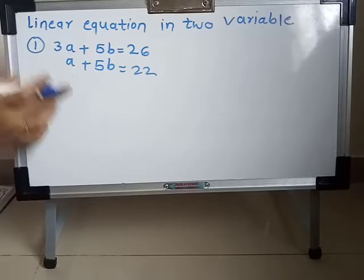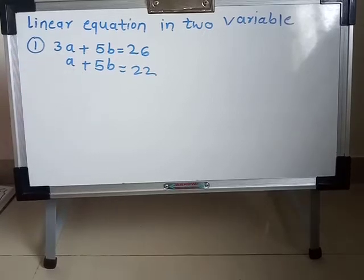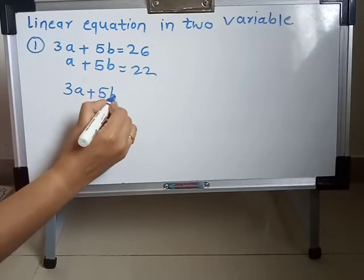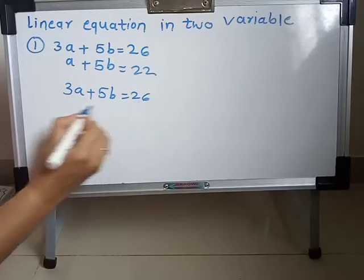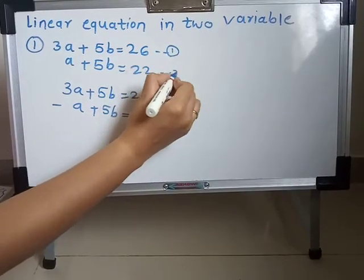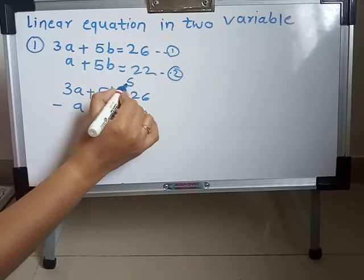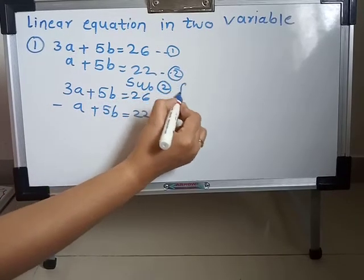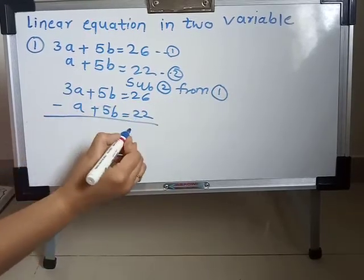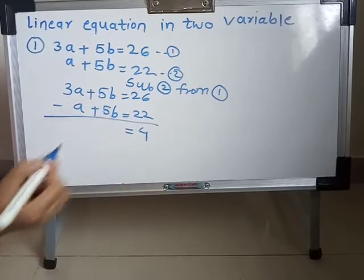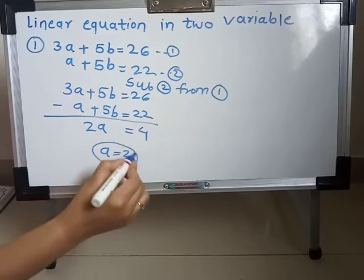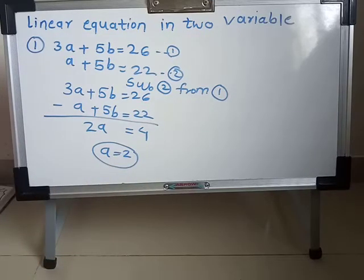Since 5B appears in both equations, they are the same and we can directly subtract. Write the comment: subtract equation second from first. 3A minus A is 2A; 5B minus 5B is 0; 26 minus 22 is 4. Hence A is equal to 2. We get the solution A equals 2.